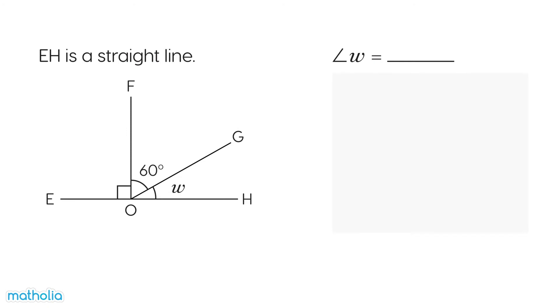Let's find the unknown angle. EH is a straight line. We need to find angle W.